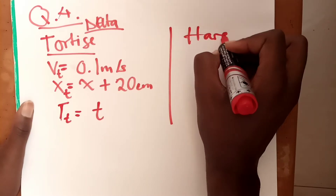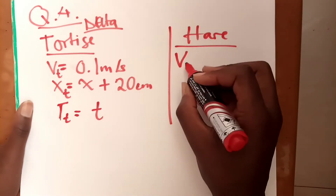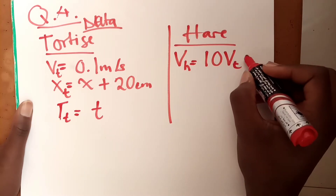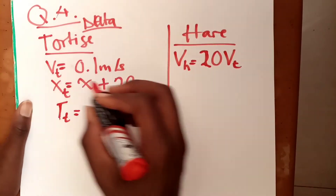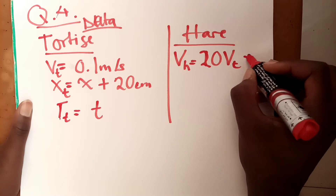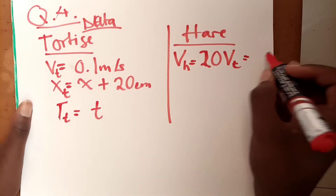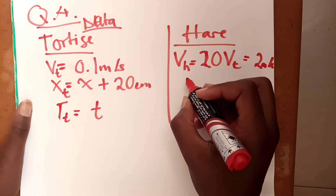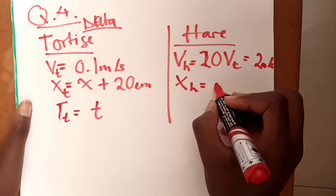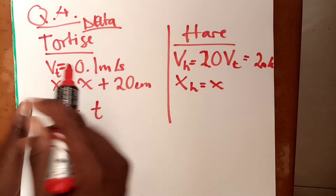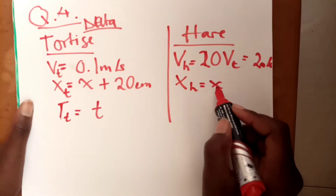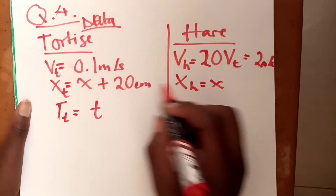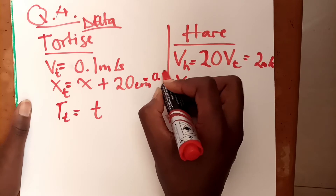Now for the hare: the velocity of the hare is going to be 20 times the velocity of the tortoise, which gives 2 meters per second. The distance for the hare is x, since the tortoise's distance is x plus 20 centimeters. Converting 20 centimeters into meters gives 0.2 meters, so the tortoise's distance is x plus 0.2 meters.